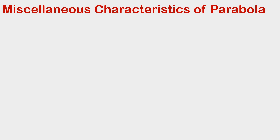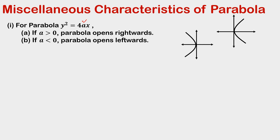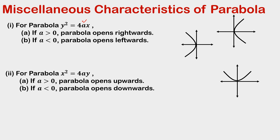For the parabola y² = 4ax, if a is positive the parabola opens rightwards, and if a is negative the parabola opens leftwards. Likewise for the parabola x² = 4ay, if a is positive the parabola opens upwards, and if a is negative the parabola opens downwards.